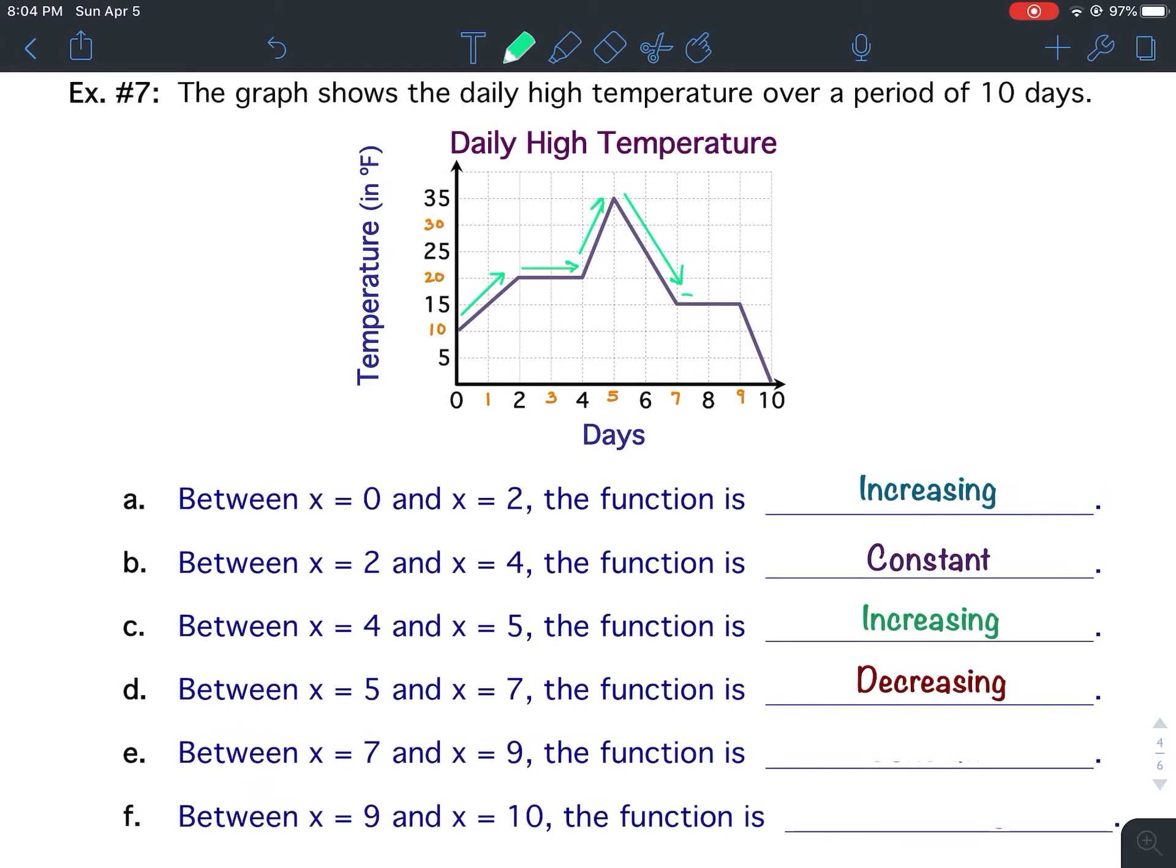From x equals 7 to x equals 9, once again, it's flat. That means it is constant. Between x equals 7 and x equals 9, the function is constant.